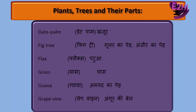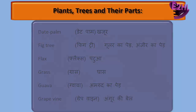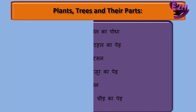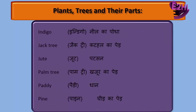Grass — Ghas. Guava — Amdur Kaped. Grape Vine — Angur Ki Bel. Indigo — Neel Kapodha. Jack Tree — Katahal Kaped. Jute — Patsan.